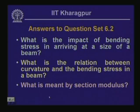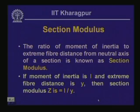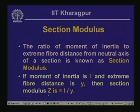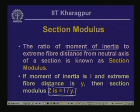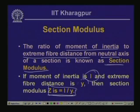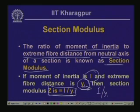The third question: what is meant by section modulus? Section modulus Z is defined as I/y, the ratio of the moment of inertia of the section to the extreme fibre distance from the neutral axis. If I is the moment of inertia and y_max is the extreme distance from the neutral axis, then Z = I/y_max. This is the section modulus used to select sections based on bending moment and allowable stress.